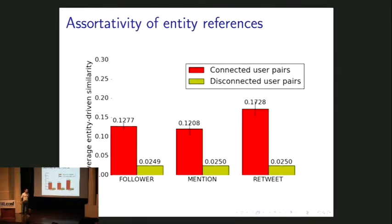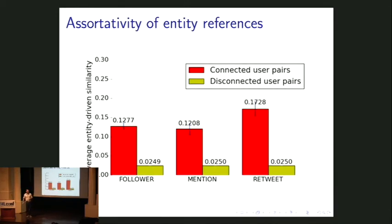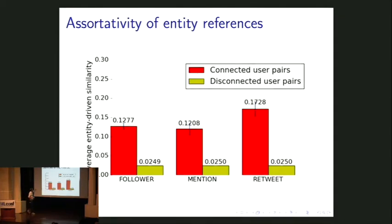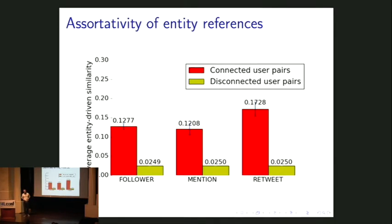We test this idea mathematically by looking at labeled data where we know what entities are being referred to by different people on Twitter. We look at whether people connected in the Twitter social network — across three kinds of networks — tend to refer to the same entities. We find using cosine similarity between entity-reference vectors that people who are connected really are more similar in terms of what they're talking about than random pairs of people in the same network.